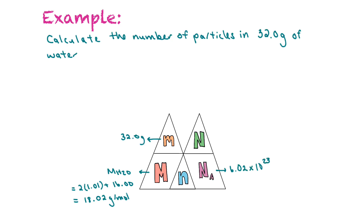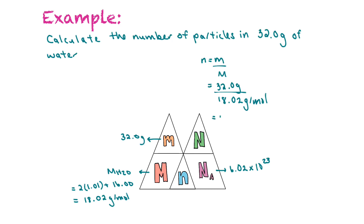The first thing we're going to do is find the number of moles. The number of moles is equal to the mass over the molar mass — that's equal to 32 grams divided by 18.02 grams per mole. Let's plug that into our calculator: 32 divided by 18.02 is equal to 1.78 moles.